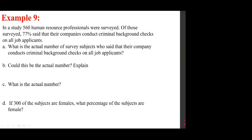In a study, 560 human resource professionals were surveyed. Of those surveyed, 77% said their companies conduct criminal background checks on all job applicants. What is the actual number? We multiply 0.77 times 560. Because the result must be a whole number (you can't have 0.2 of a person), the answer rounds to 431.